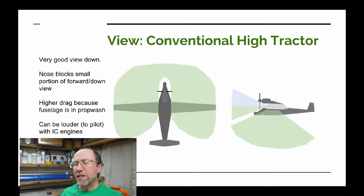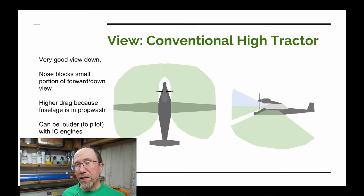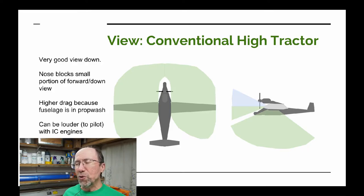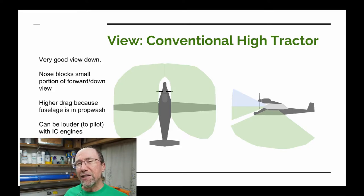Another configuration you'll see on some ultralights is the tractor configuration where the engine is mounted to the wing. This gives you a better view over the nose. You also get the advantage that pilot weight is not an issue — the pilot is close to the CG, so you can have one pilot, two pilots, a light or heavy pilot. It's an interesting compromise: the low nose view of the pusher configuration combined with the forgiving pilot CG characteristics of the tractor configuration.